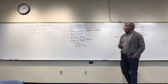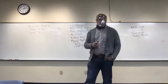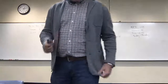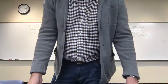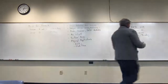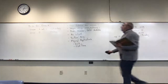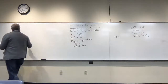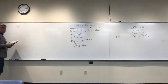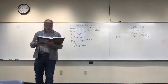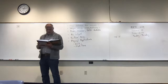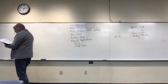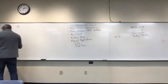Moving to homework questions over section 6.7, problem 38. Problem 38 is about emptying a partially filled swimming pool. The pool has the shape of a box with a base of 25 by 15 and a uniform depth of 2.5 meters. The question asks how much work is required to pump all the water to a level three meters above the bottom of the pool.